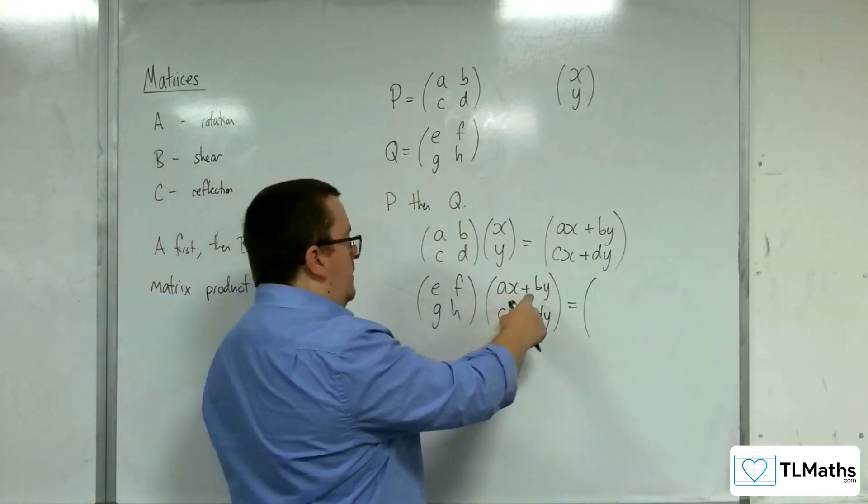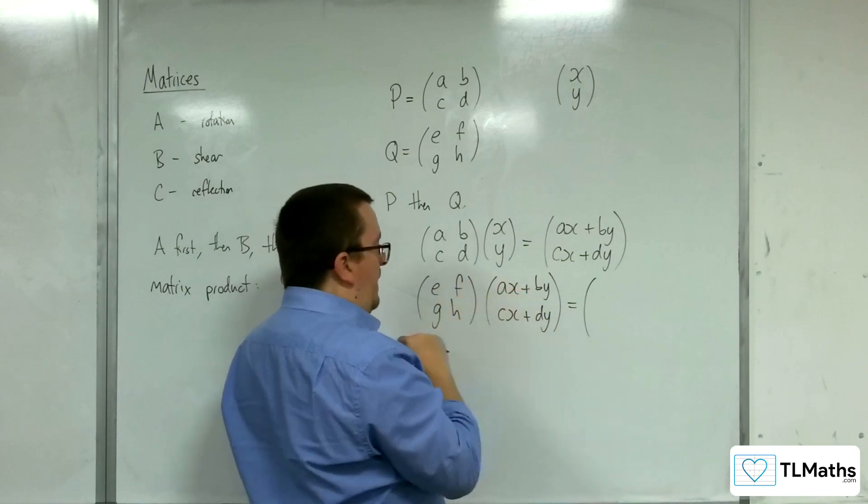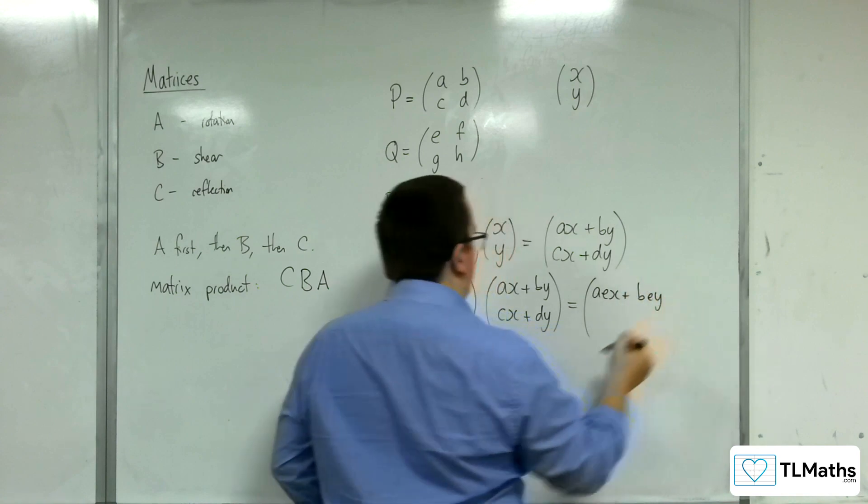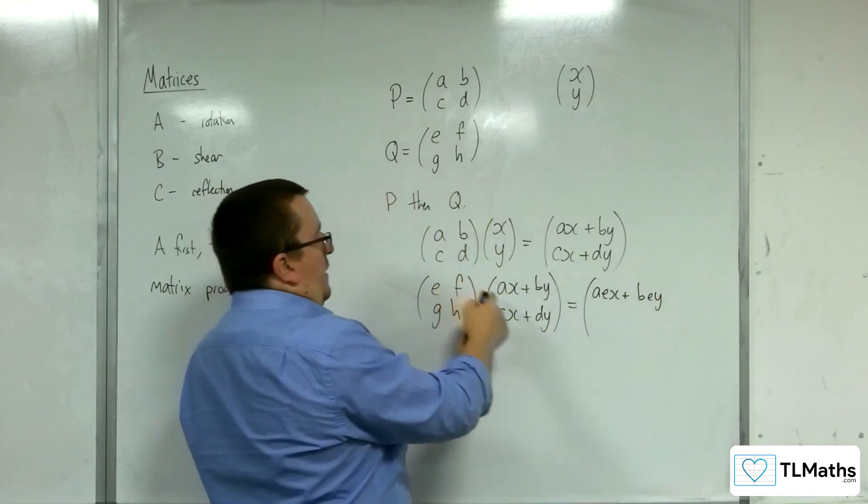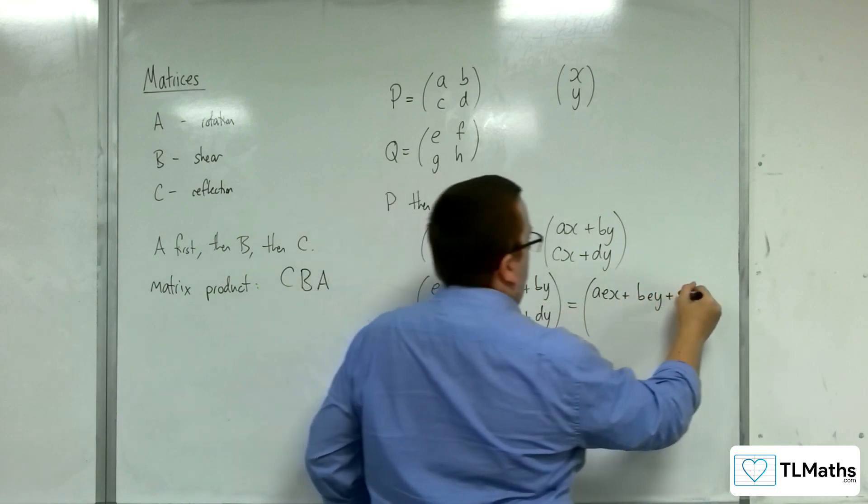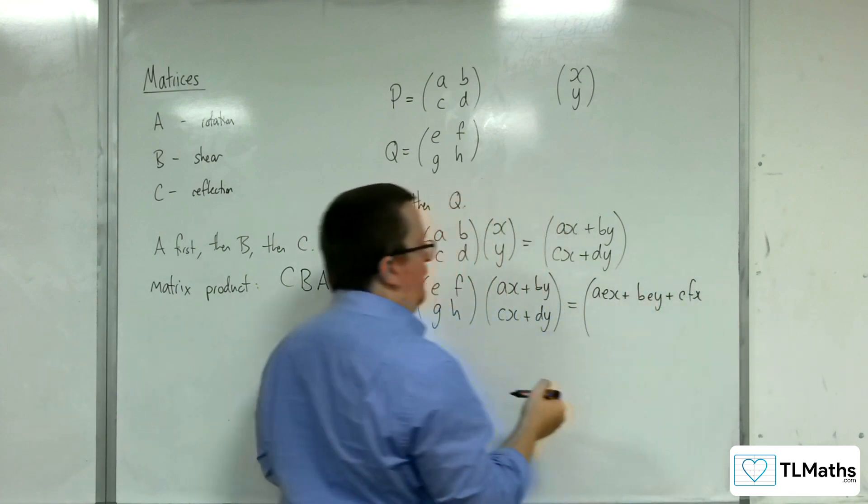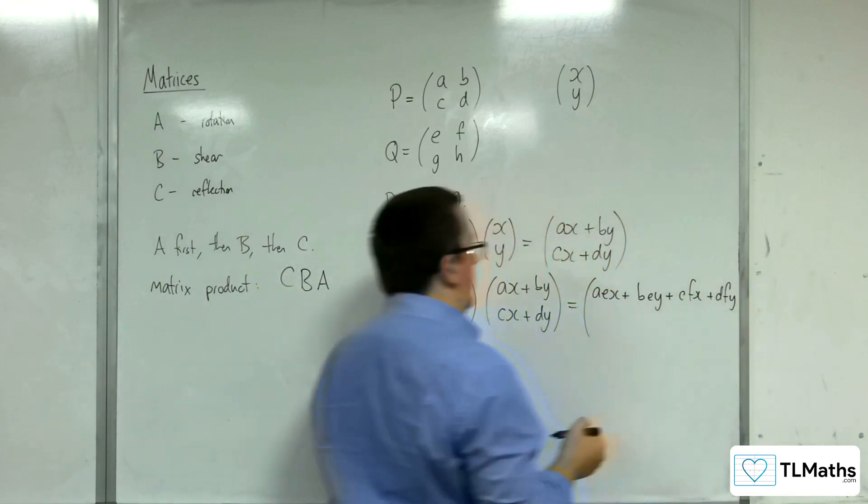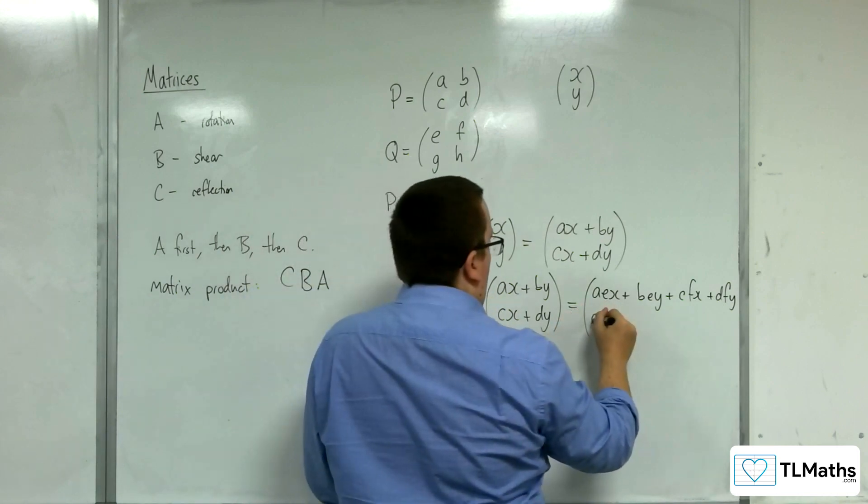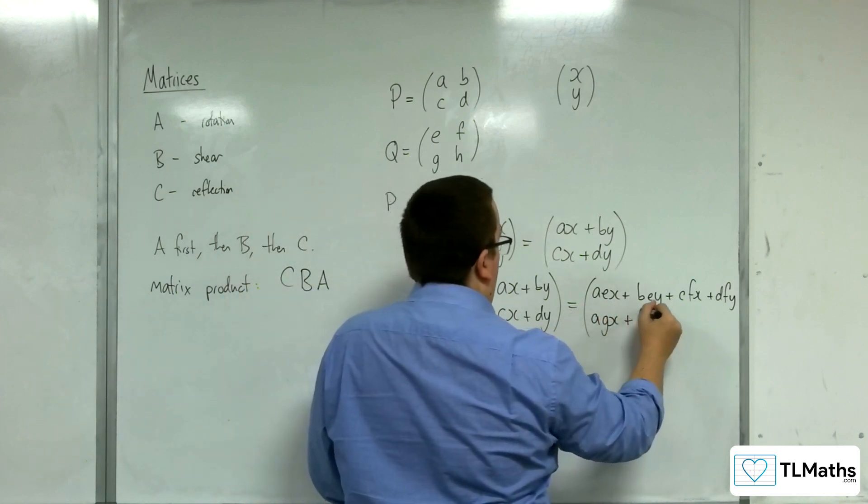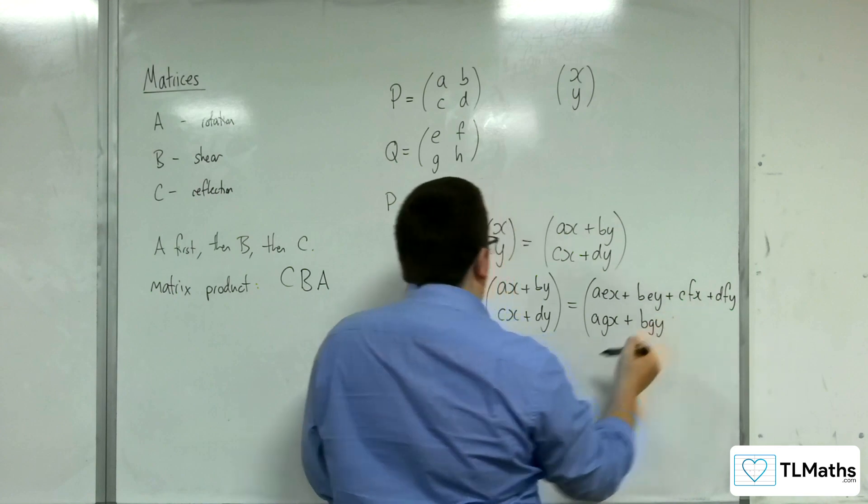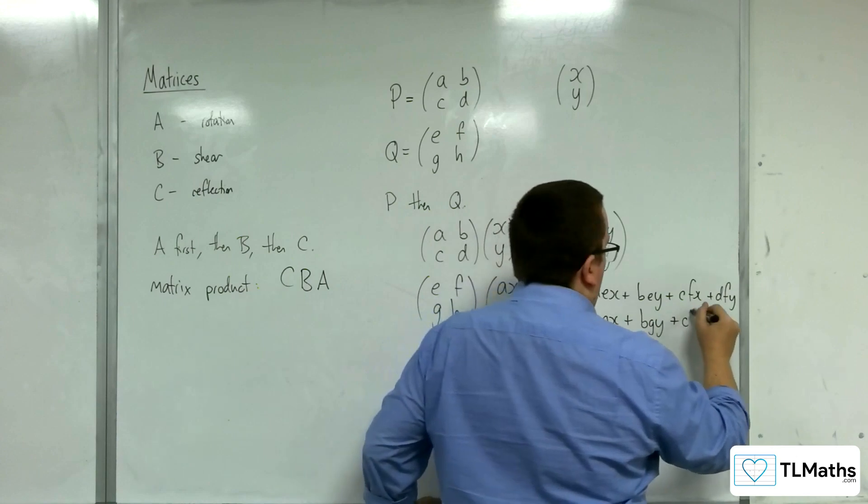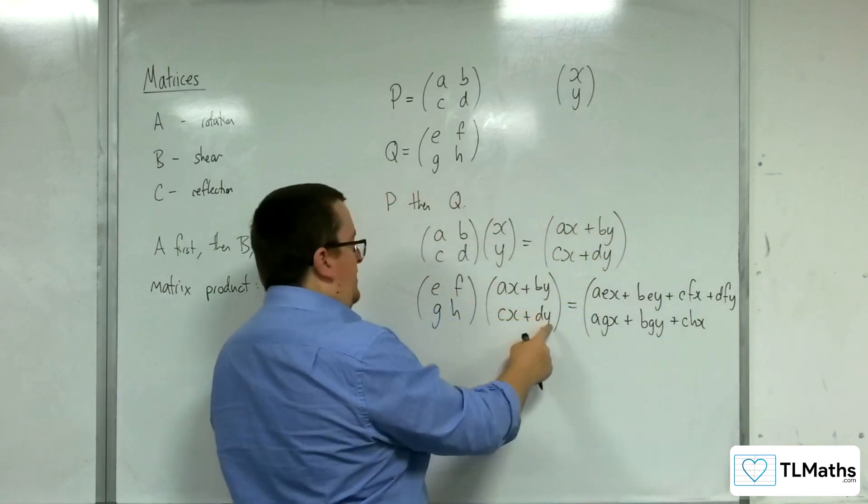So I've got E being applied to A, X plus B, Y, so I'm multiplied by that. So I'll have A, E, X plus B, E, Y. Then I've got plus C, F, X, just keeping everything in alphabetical order, and D, F, Y. Then I've got G, H multiplied by each of these, so A, G, X plus B, G, Y plus C, H, X and D, H, Y.